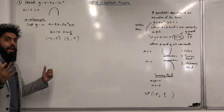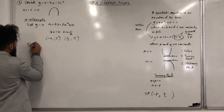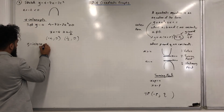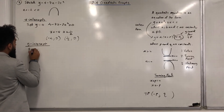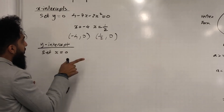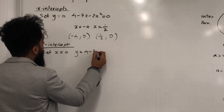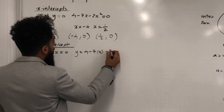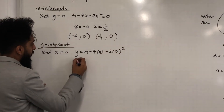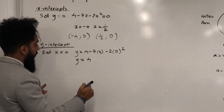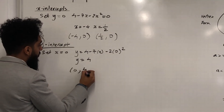To find the y-intercept, I set x = 0. This gives y = 4 − 7(0) − 2(0²), hence y = 4. So the y-intercept is (0, 4).